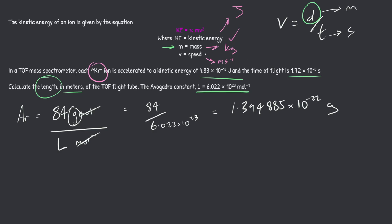So then if we do this, it's going to be 84 divided by 6.022 times 10 to the 23. If you plug that in your calculator, you're going to get an answer of 1.394885 times 10 to the minus 22. Now, what are the units for this? Remember, I said it leaves grams. So that's grams right here. Is grams the correct unit for our mass here? No, it's not. We want kilograms.